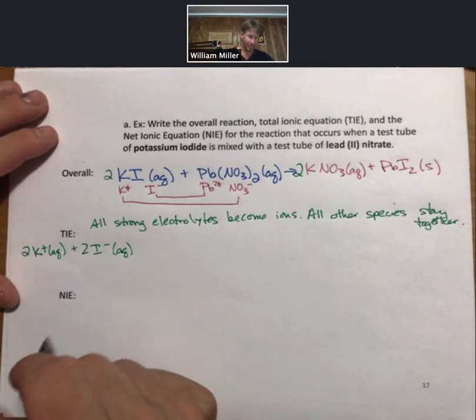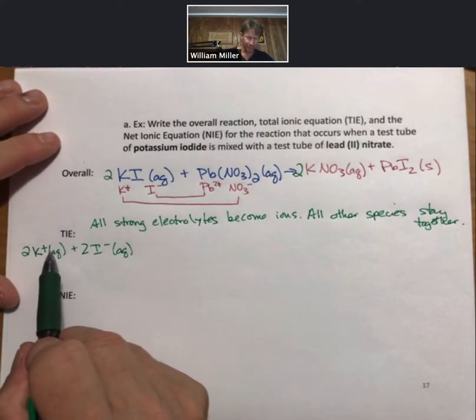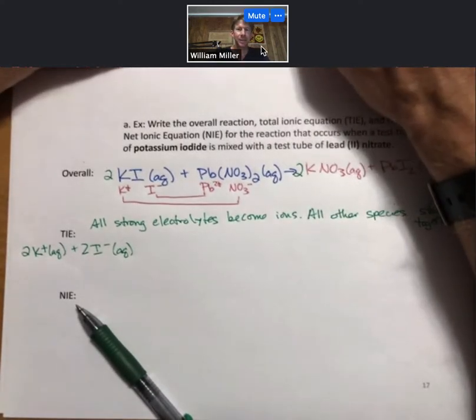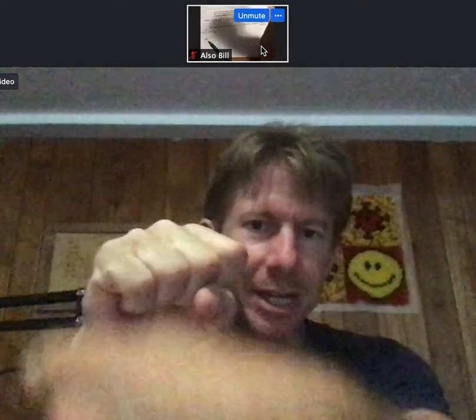In our head, as we write these two things, we realize that K plus and I minus, those are going to be aqueous ions, and each of those aqueous ions is going to have a hydration shell of water molecules around it. K plus is positive, so it's going to have the oxygen portion of the water molecules facing it.